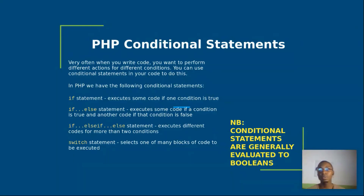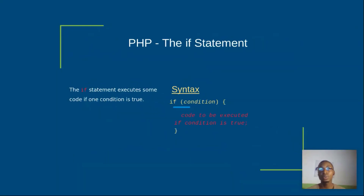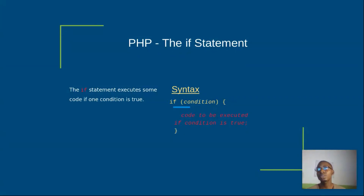We're going to do a quick overview of all of these. The if statement executes some code if one condition is true — take note, if one condition is true. So in this case we're working with just one condition, and you have your syntax: if, then passing the condition. That is how the syntax is; that is how you are supposed to write the condition.